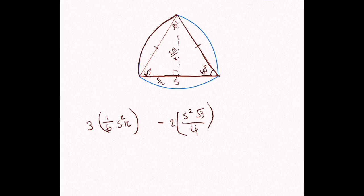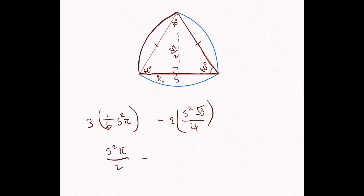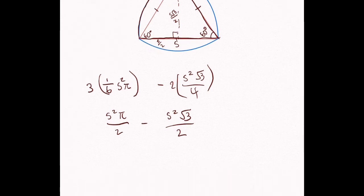So let's distribute the 3. That'll leave us with s squared pi over 2 minus s squared square root of 3 over 2. We can actually simplify this further. Let's factor out s squared over 2 or 1 half s squared. Same thing. 1 half s squared.